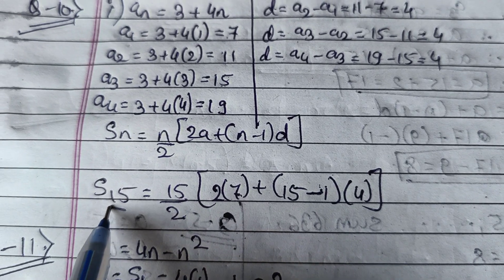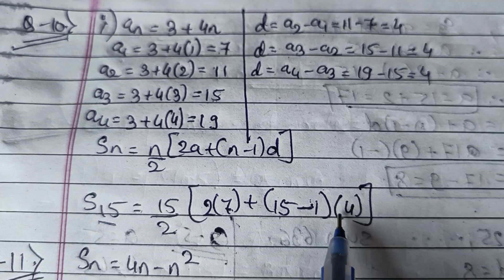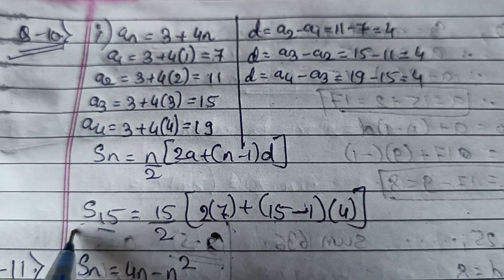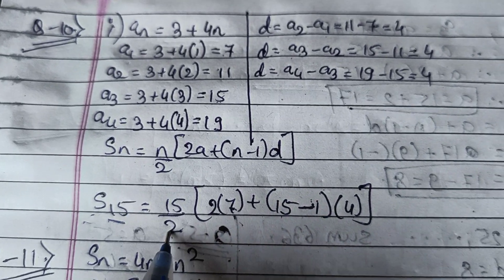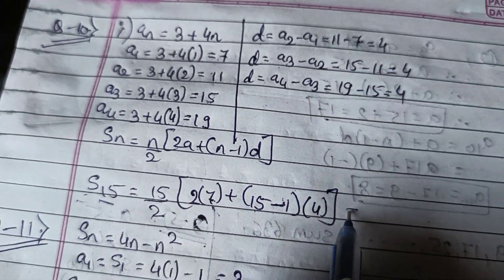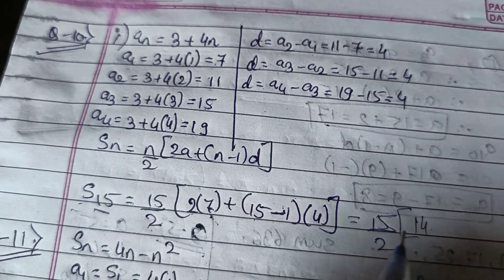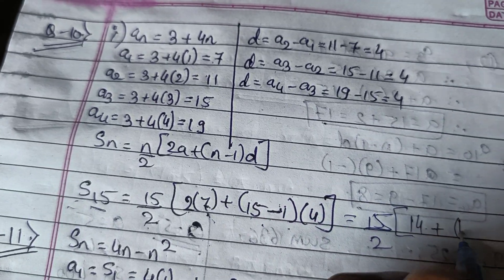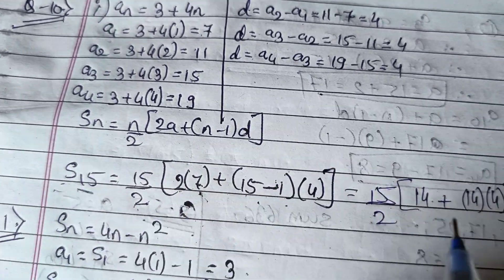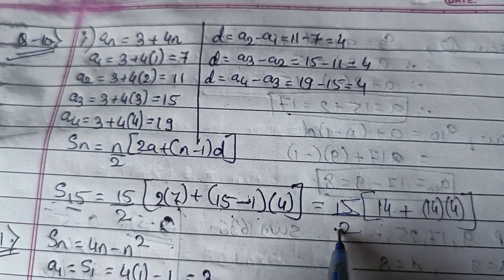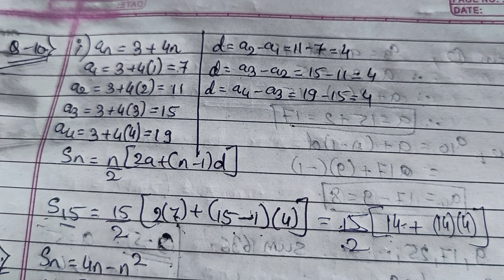Now find sum of 15 terms: S15 = 15/2 × (2×7 + (15−1)×4) = 15/2 × (14 + 14×4). Multiply the bracket first: 14 + 56 = 70. Then S15 = 15/2 × 70 = 15 × 35 = 525.